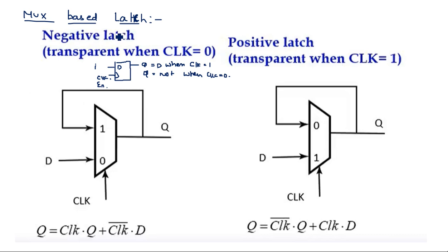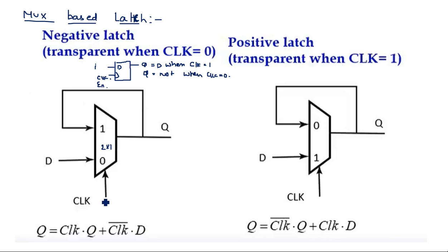This is the standard latch operation, and now the same can be constructed using a multiplexer. For a negative latch, it is transparent when clock equals zero — meaning output equals input. Using a 2-by-1 multiplexer, input zero is connected to data input D, and input one is connected to feedback (the previous state). When clock equals zero, it selects D, so Q equals D.